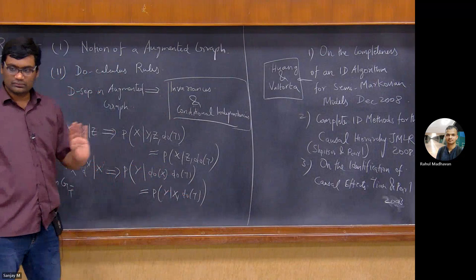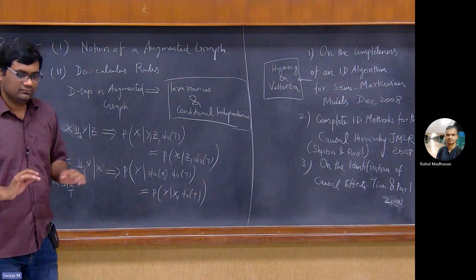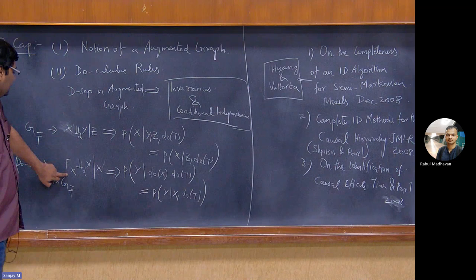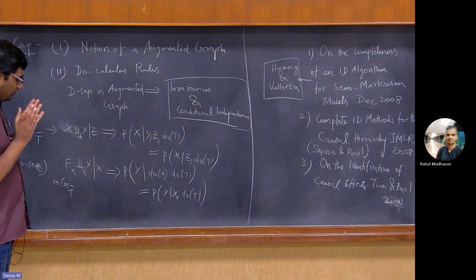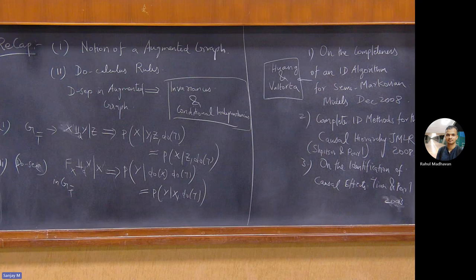It's called do-see because do is the same as see. It probably goes for more dependencies, but here you only require the immediate parents — FX is that. You just simply draw a node; in G-T-bar you take G-T-bar and draw a node which has arrows only to X. If you find this d-separation in that graph, it immediately implies these two distributions hold. It's a very powerful statement — proving it is not very hard, but the implications are pretty enormous.